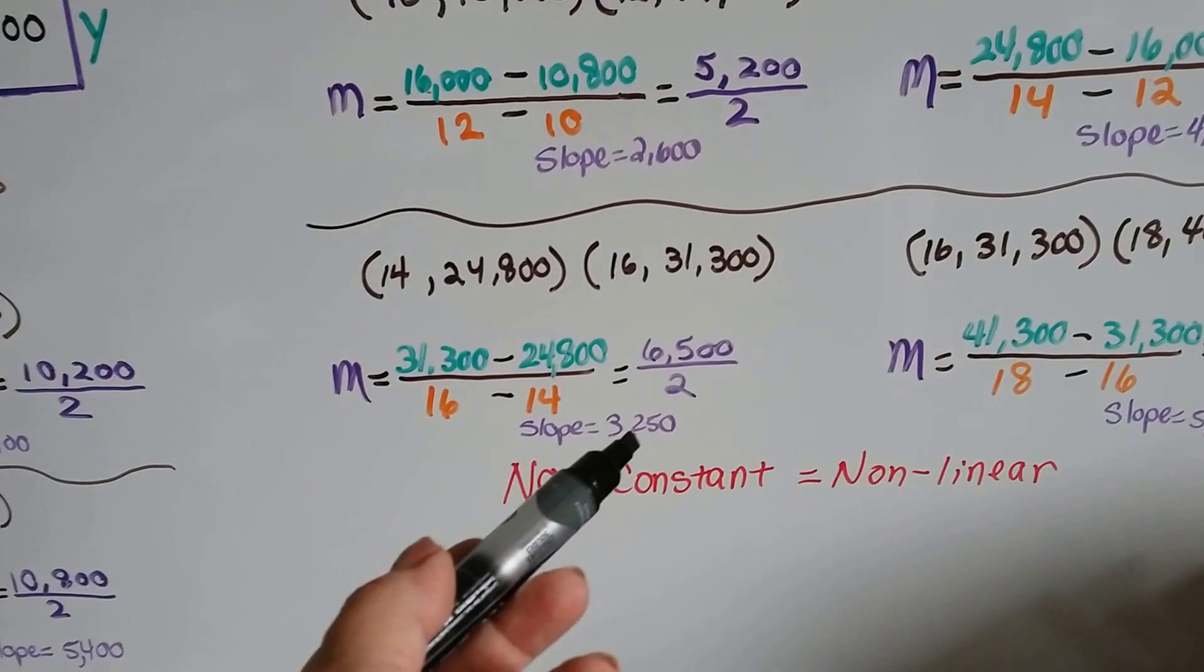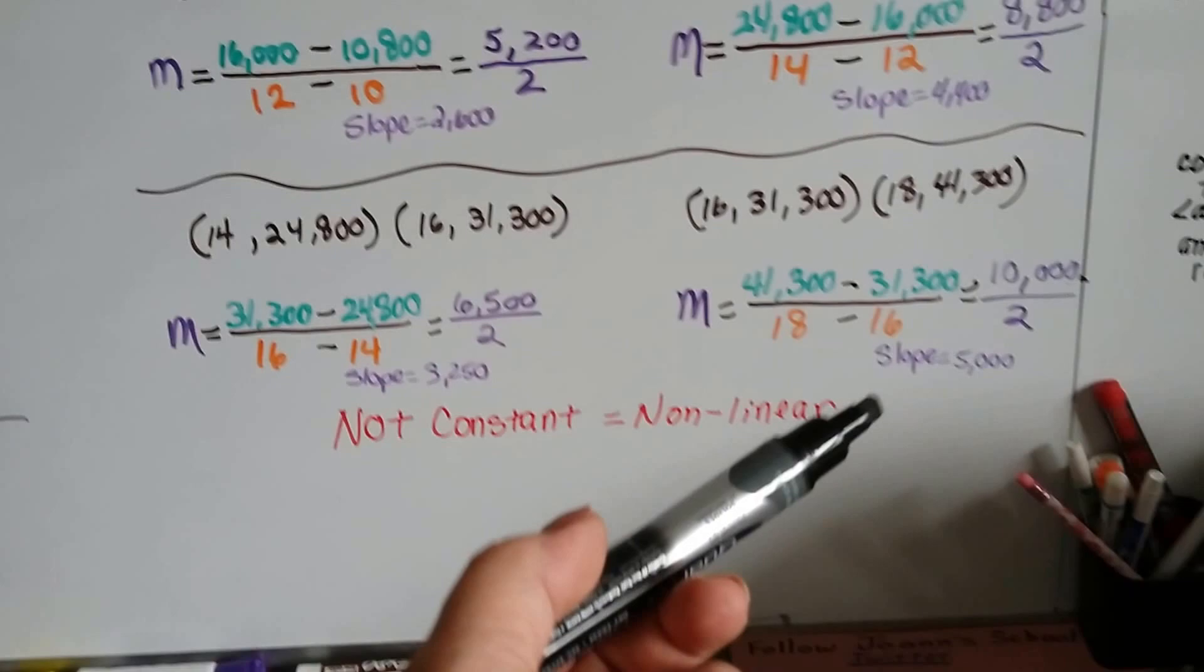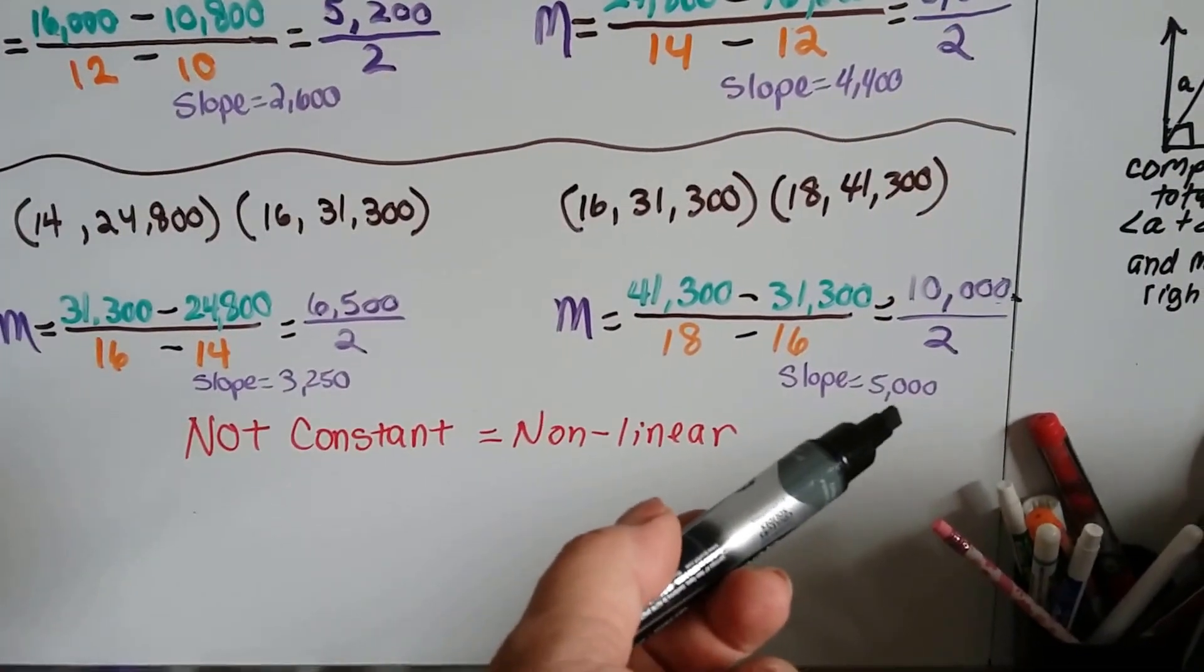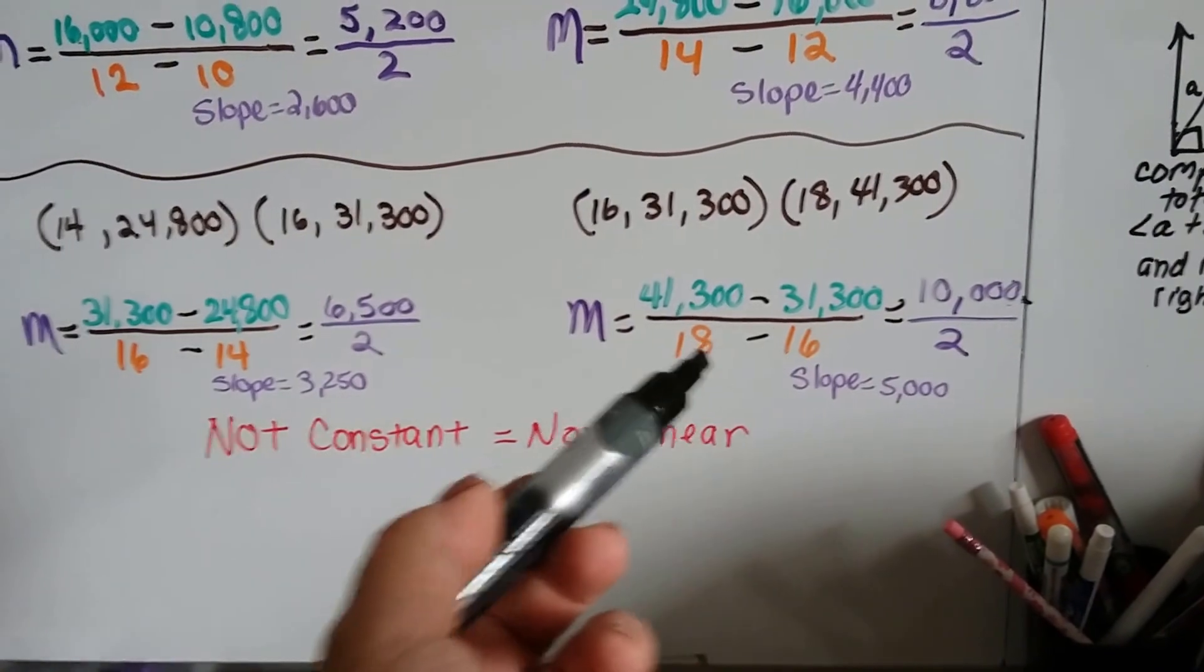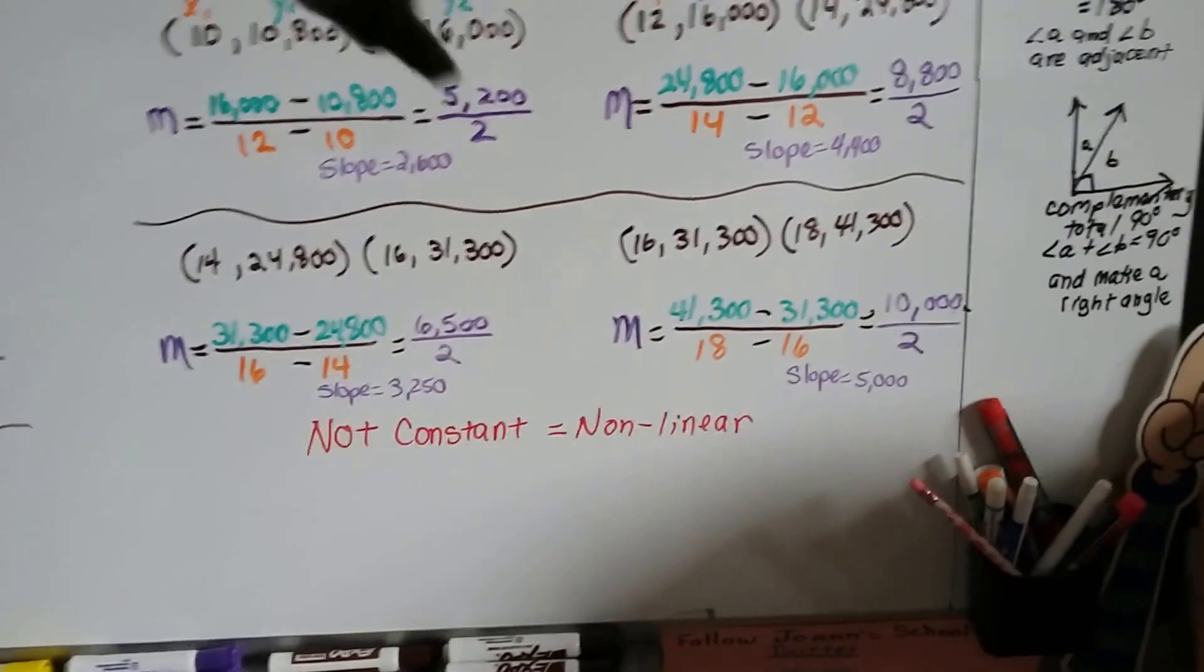For a bachelor's degree compared to the associate's degree, she's going to make about $3,250 a year more for every year she stays in school. And to compare that bachelor's to a master's degree, she's going to make about $5,000 a year more for each year she stays in school from this point to this point.